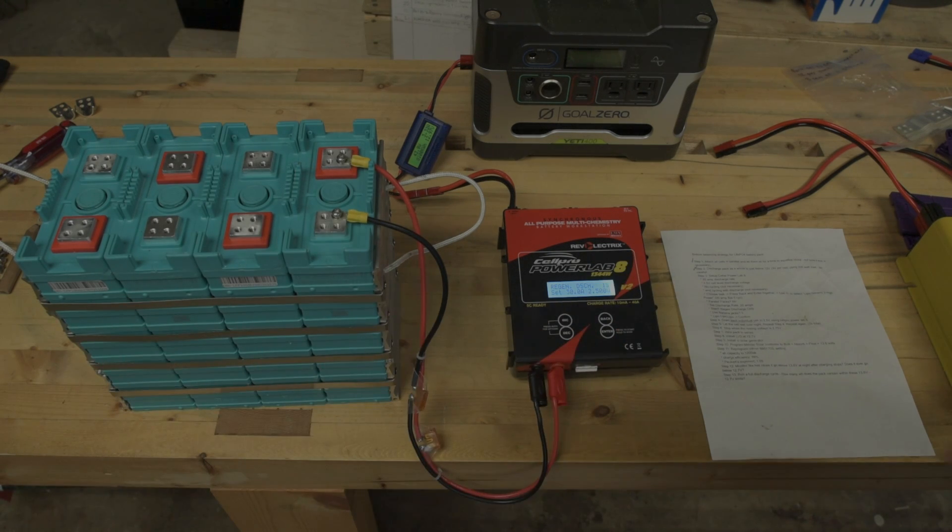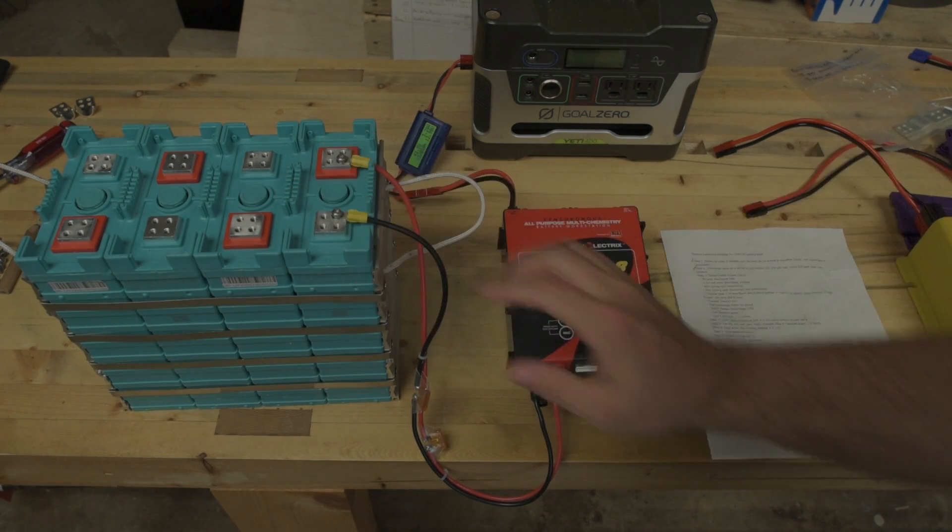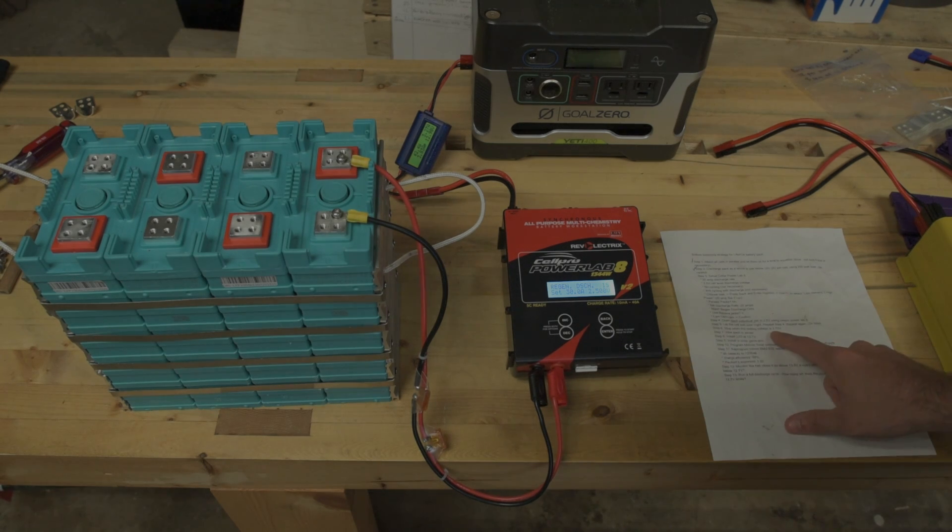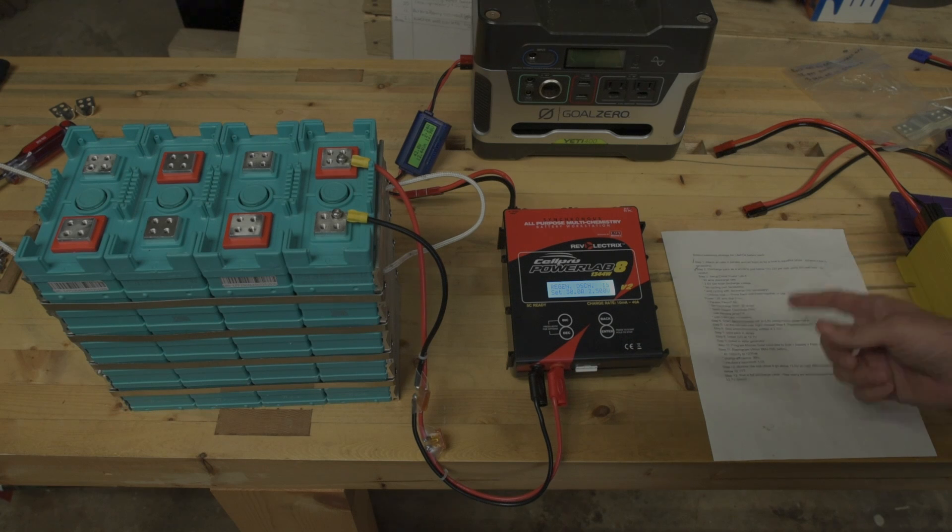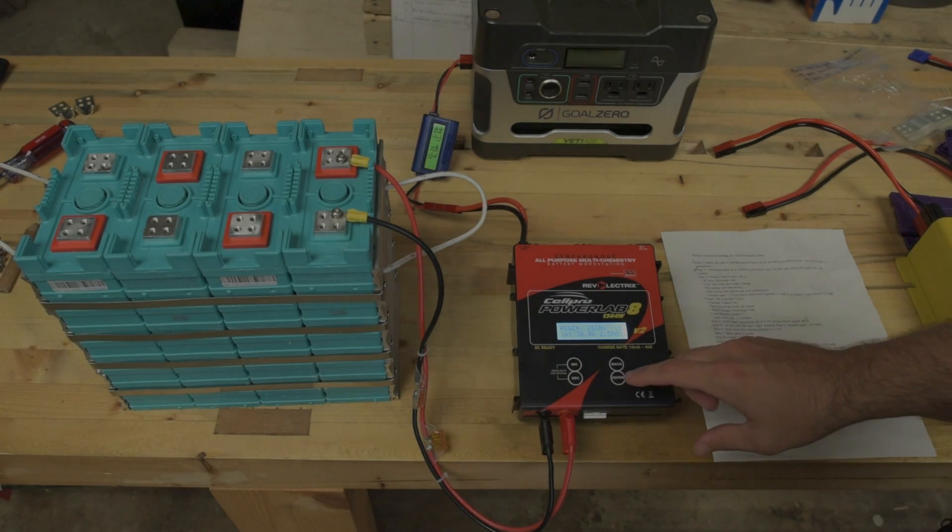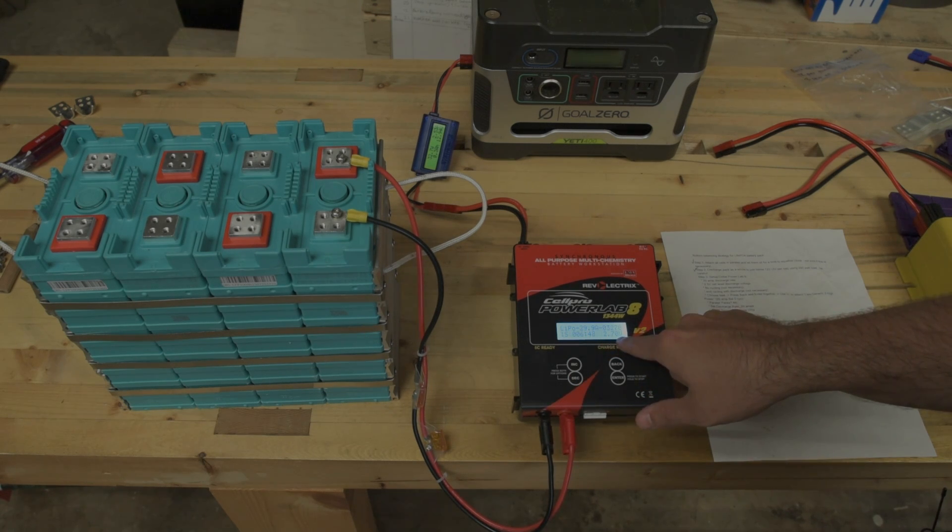We are to let each cell rest overnight and then repeat and drain it to 2.5 volts again. Even though we're bringing it down to 2.5 volts per cell, we're actually going to be stopping this procedure when the resting voltage of the cell is 2.75 volts. When we let it rest overnight, the voltage will rise. When that resting voltage is 2.75 volts, we know that we're done and our pack is bottom balanced properly.